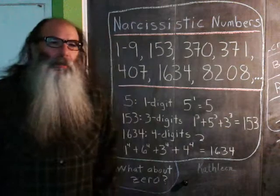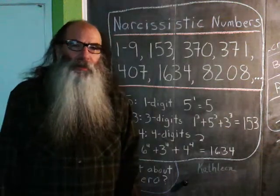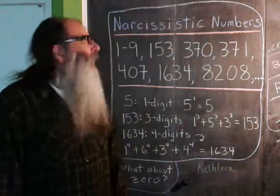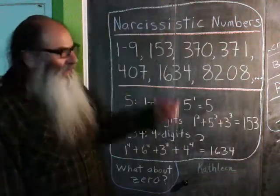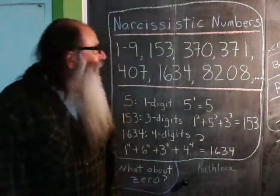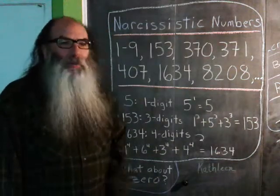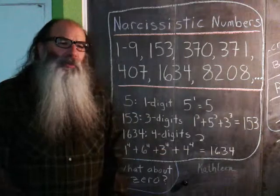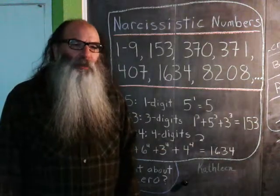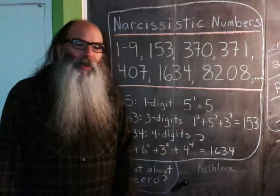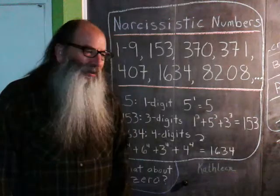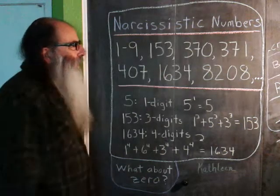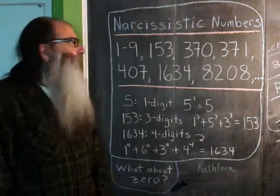Hello, it's December 6, 2013. I'm doing a math babbler bit about Narcissistic Numbers. Narcissistic Numbers is an integer sequence that has an entry for it in the OEIS, which is the Online Encyclopedia of Integer Sequences. And up here I have the first few Narcissistic Numbers.